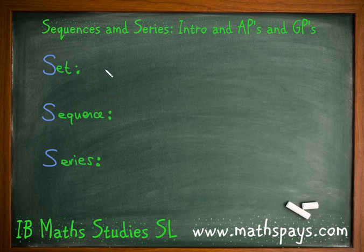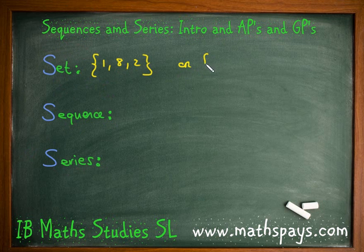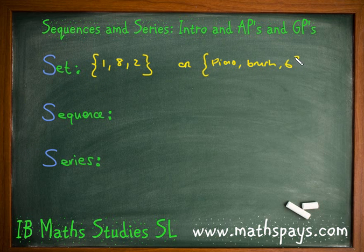So first of all, what is a set? A set is simply a group of objects. I could say 1, 8 and 2, or I could even use a piano, a brush, and a number — it's a set of objects. You can use letters as well.